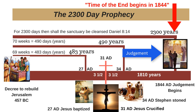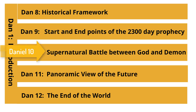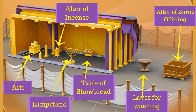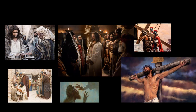Daniel chapter 9 also identifies the end of the 2300-day prophecy when the judgment of mankind will begin. Daniel chapter 10 describes in detail how the holy angel and Michael fought a supernatural battle with the demon prince of Persia. Both sides were struggling to influence King Cyrus. At last, King Cyrus made the right decision to stand by his royal decree to rebuild the temple in Jerusalem. The rebuilding of the temple was crucial to future events in earth's history. The sanctuary service was itself prophetic as it laid out the life and work of our Savior, Jesus Christ.